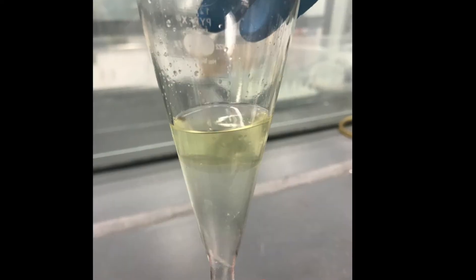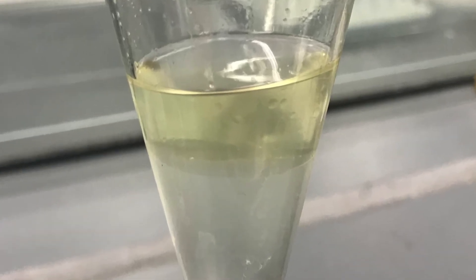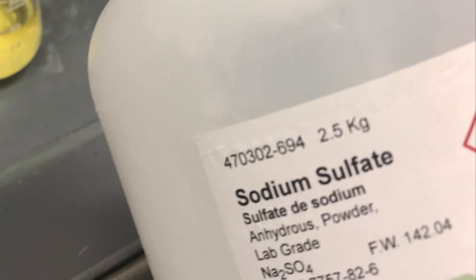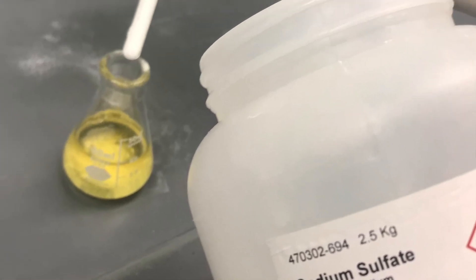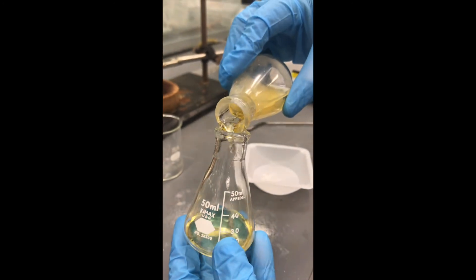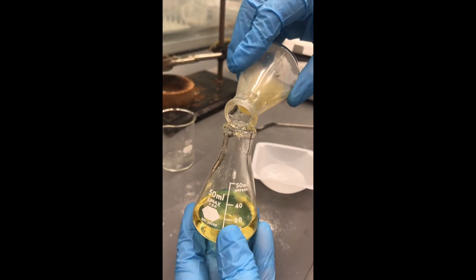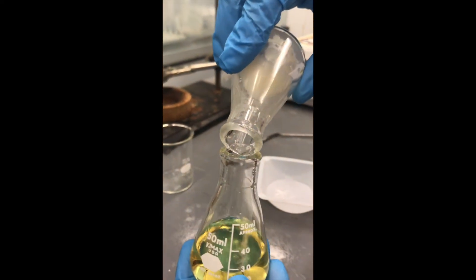I am going to wash that aqueous layer one more time with another 5 milliliters of ether, and then I am going to take both ether layers, put them together, and dry with sodium sulfate. After a few minutes, when my ether layer is dry, I can then decant or pour my ether from the sodium sulfate into a new Erlenmeyer flask.